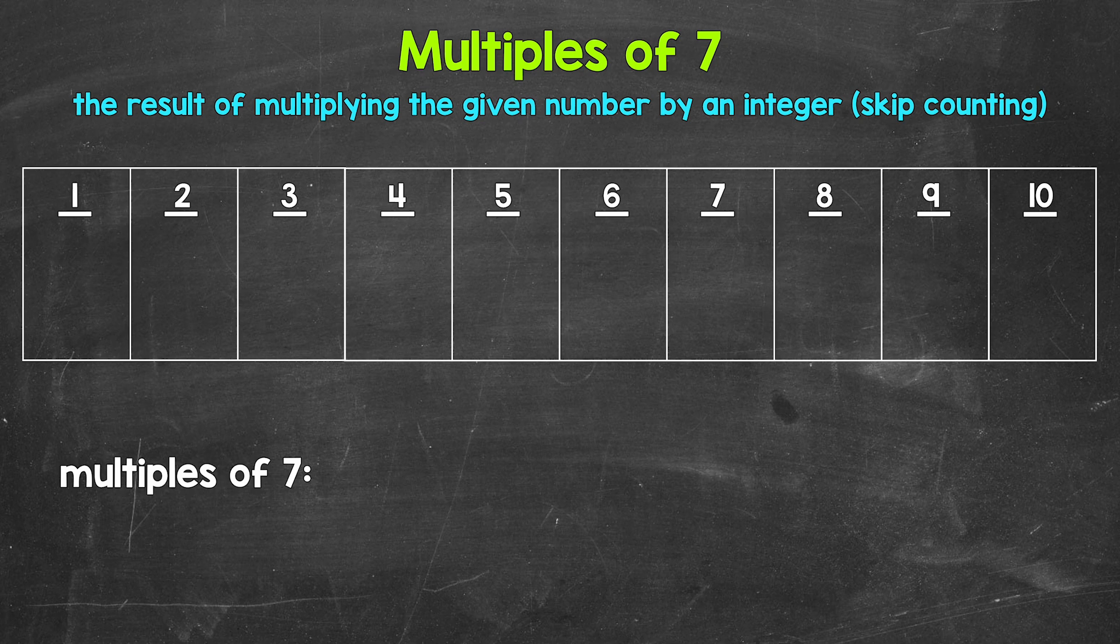Another way to think about multiples is to skip count. So all of the numbers something is going to hit when counting up by that number. Those are all going to be multiples.